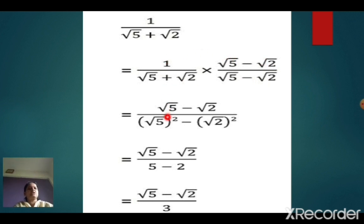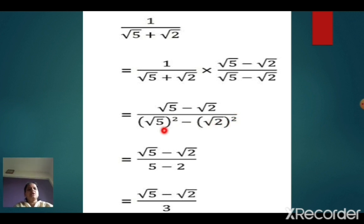Multiplying by 1, the numerator becomes root 5 minus root 2. Again, applying the identity a plus b into a minus b equals a squared minus b squared, it will be root 5 squared minus root 2 squared. Root 5 squared is 5, and root 2 squared is 2 — if you take a square root and square it, the number remains as it is. Therefore, 5 minus 2 equals 3. The final answer is root 5 minus root 2 upon 3.